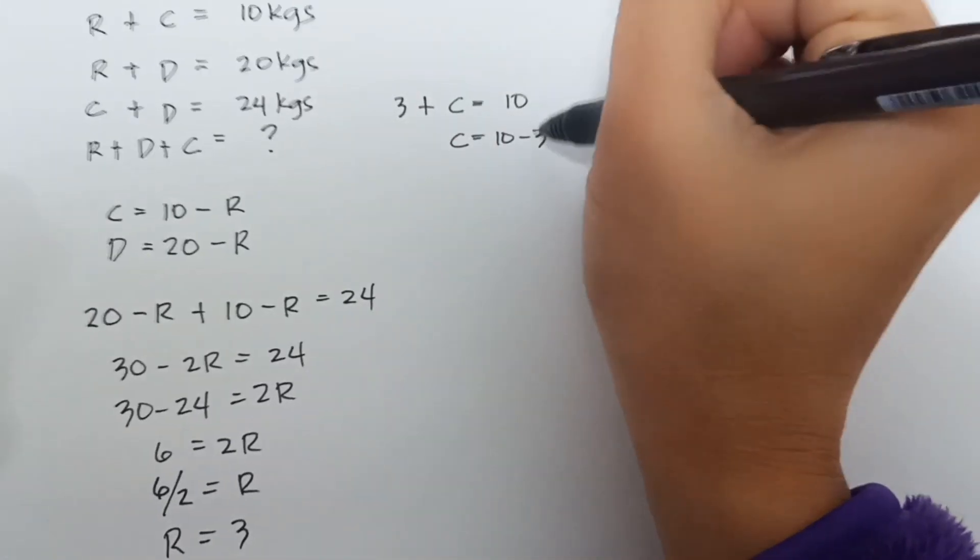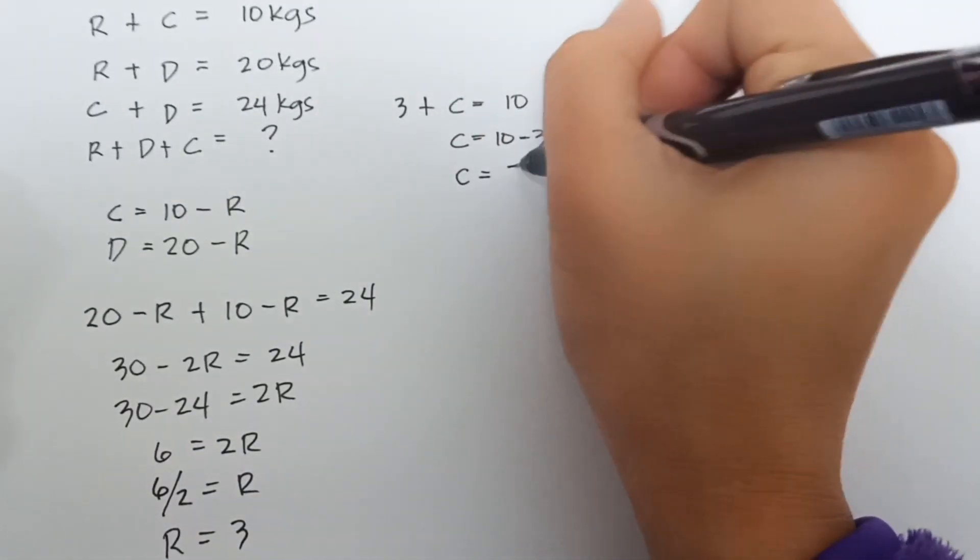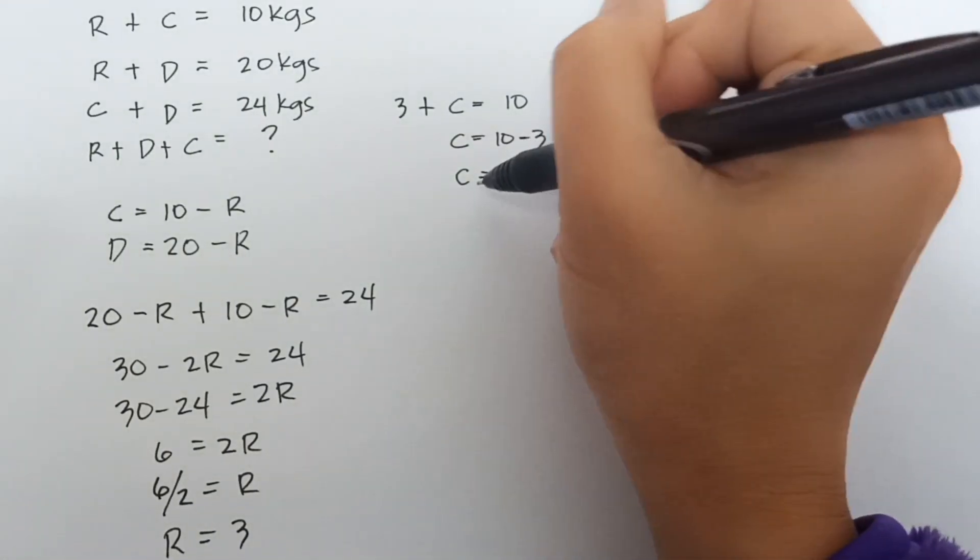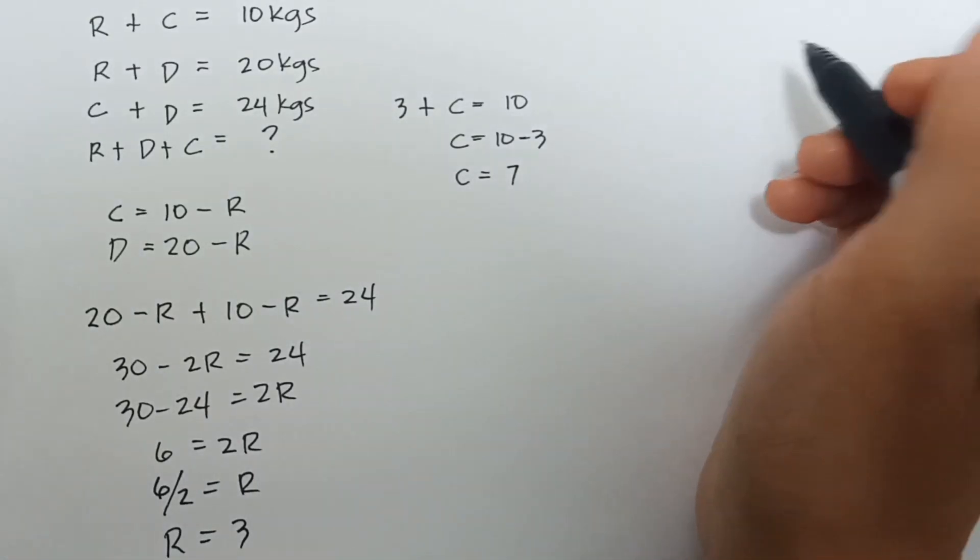Since we transfer it, it's subtraction. So, C equals 7. So guys, we have also the value of cat, which is 7. Then, let's find the value of the dog.